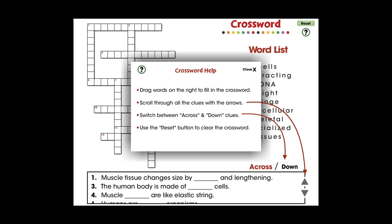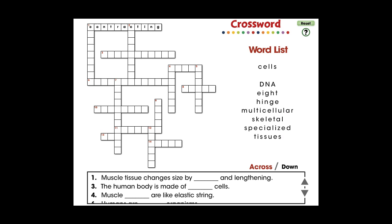In this crossword activity, 16 vocabulary words are provided with across and down clues. For middle school, this mini is great for vocabulary and comprehending all the words centered around the vocabulary in the topic of cells, skeletal, and muscular systems.